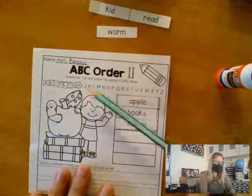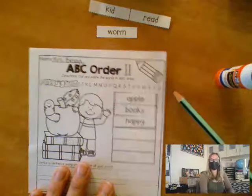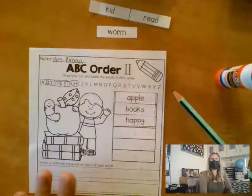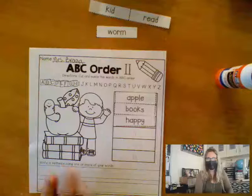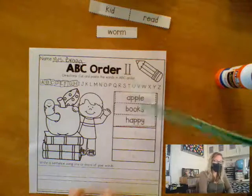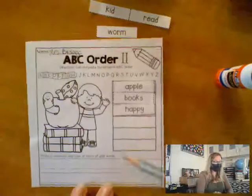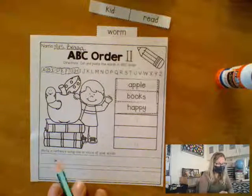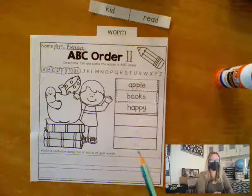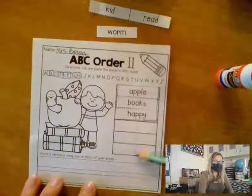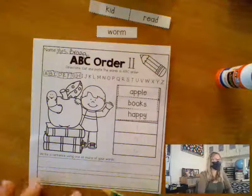Once you have all your words glued in ABC order, down here at the bottom it says 'write a sentence using one or more of your words.' So using these words that you put in ABC order, write a sentence for me.